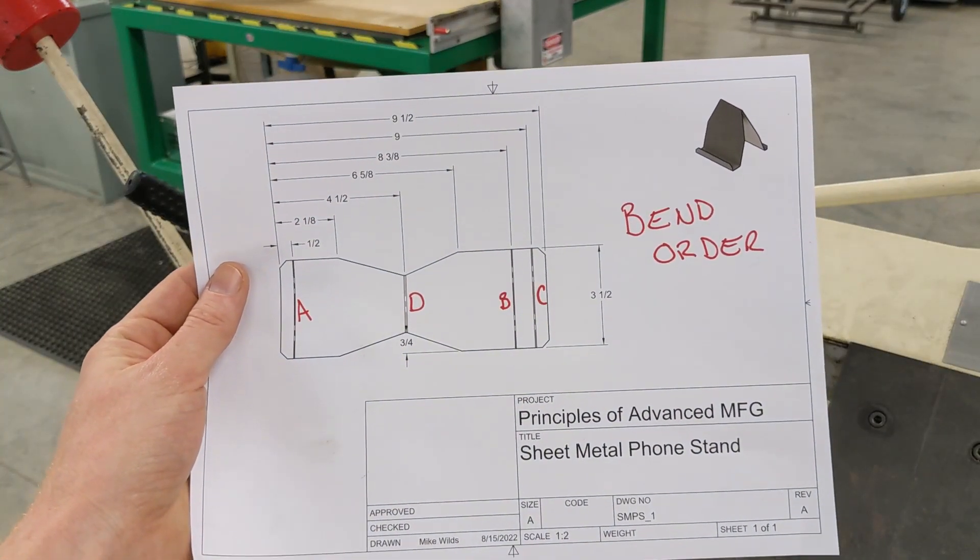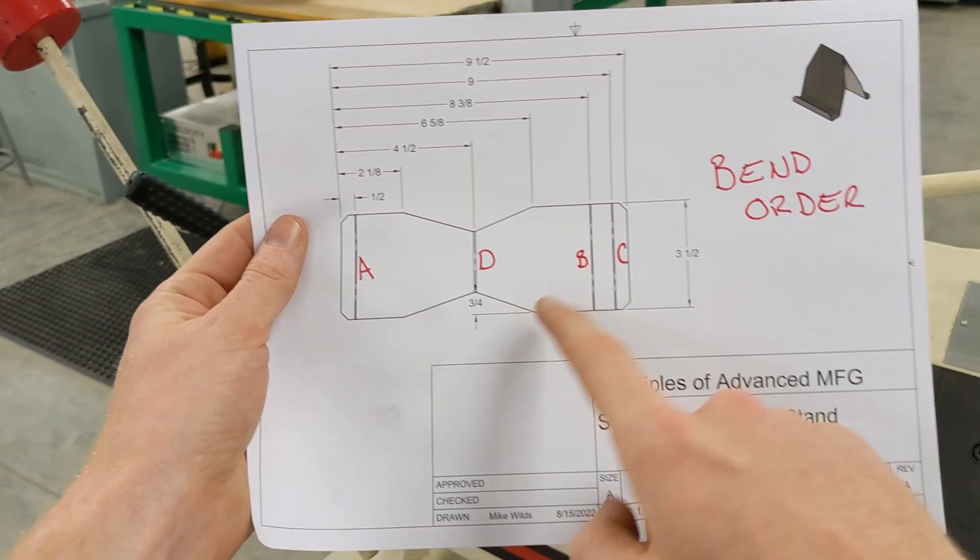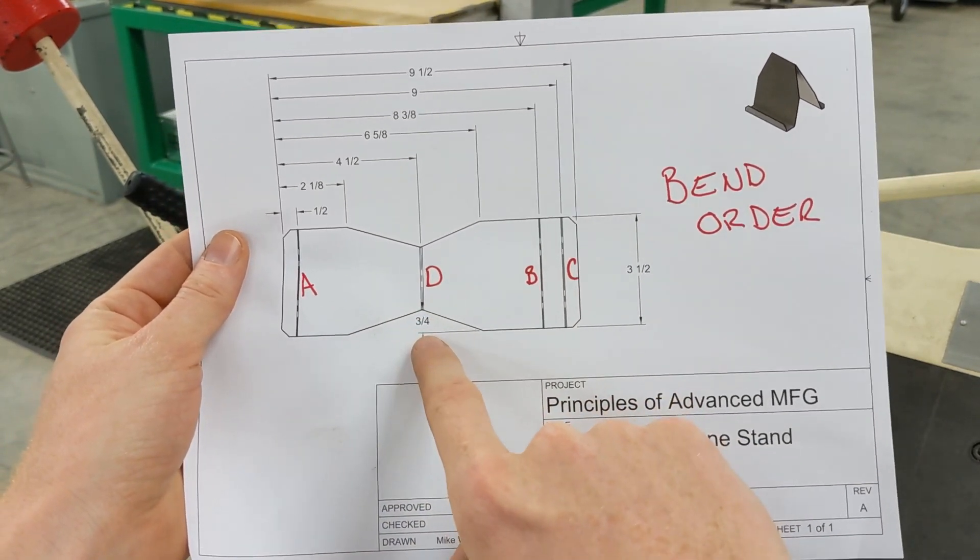When we get to the bend portion of this project, I have my students get their plans out and we write down the order of their bends. So we start with A then we do B, C, flip our metal over and do D.